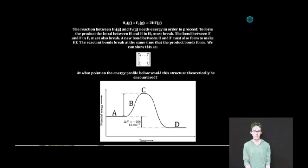A new bond between H and F must also form to make HF. The reactant bonds break at the same time the product bonds form.